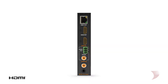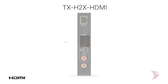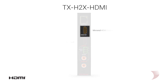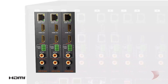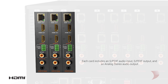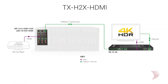Starting with the TX-H2X HDMI card, inputting via HDMI in with an additional mirrored HDMI out, it also sports multiple audio options including SPDIF audio in and SPDIF analog stereo audio out, all of which is then distributed over HDBase-T.